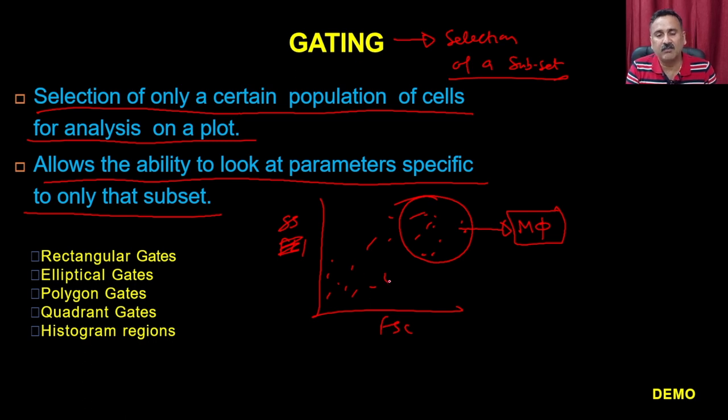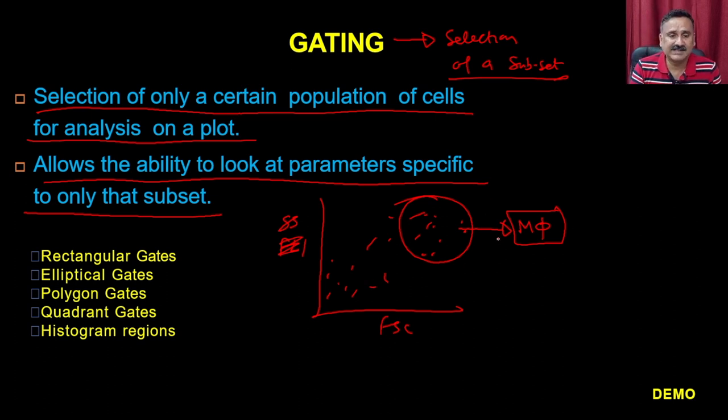You can have different types of gates: rectangular, elliptical, polygonal, quadrant, histogram gates, and so on. To explain these in more detail with an instrument, a demo clip has been prepared where students explain all these steps.